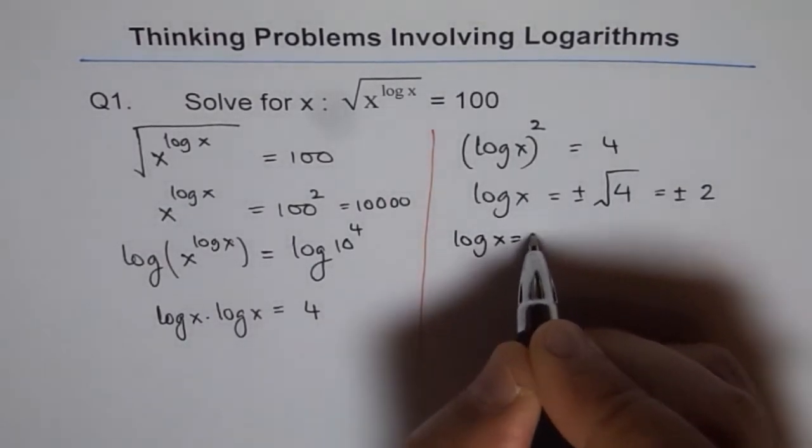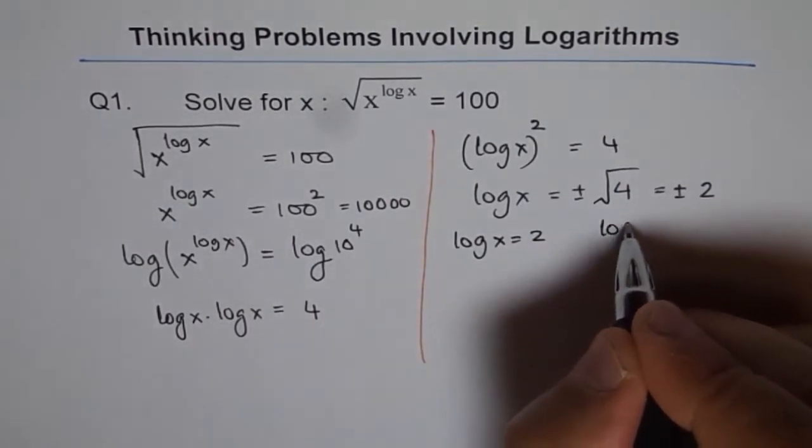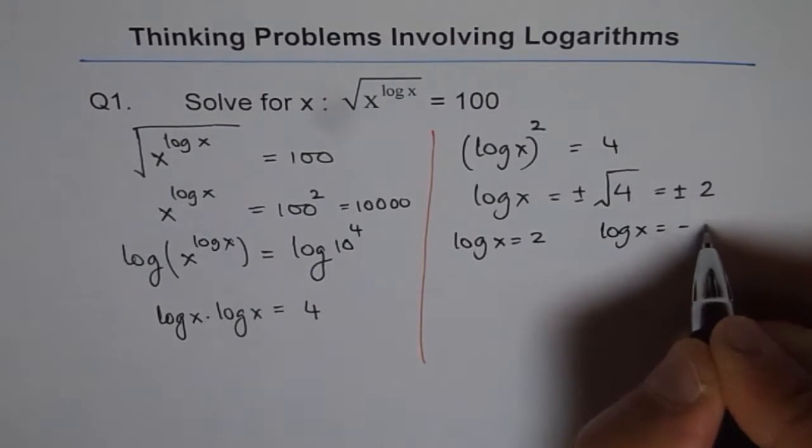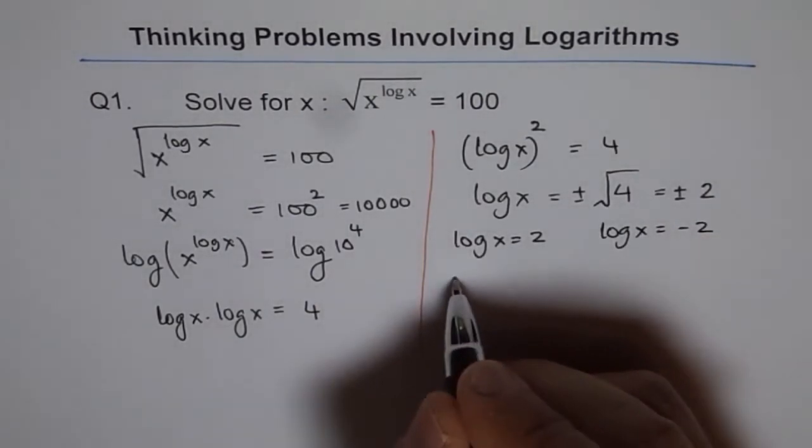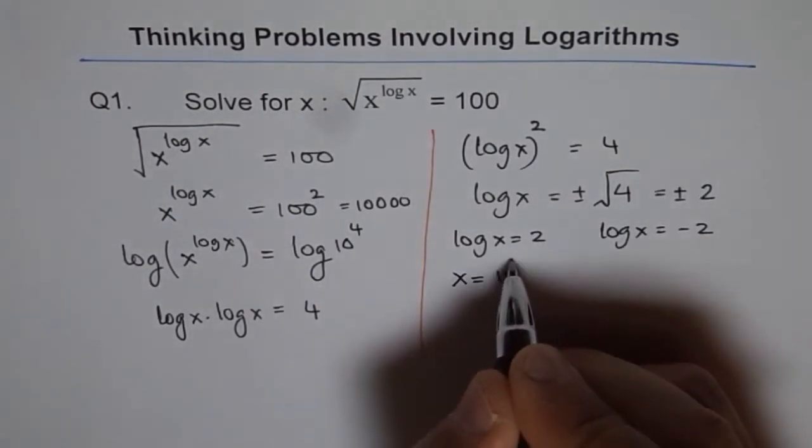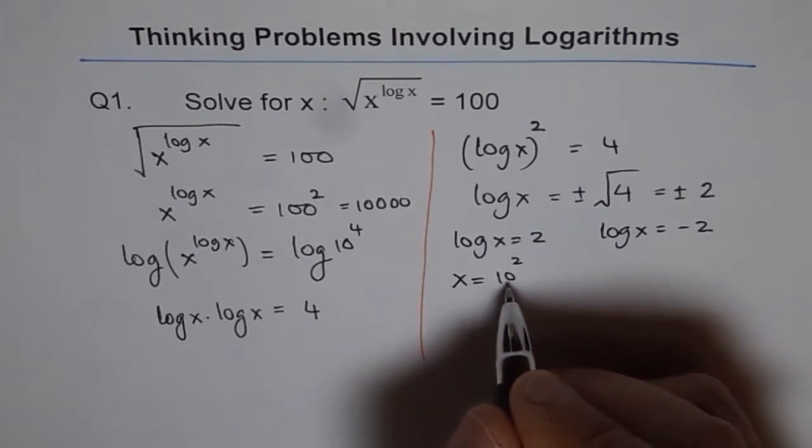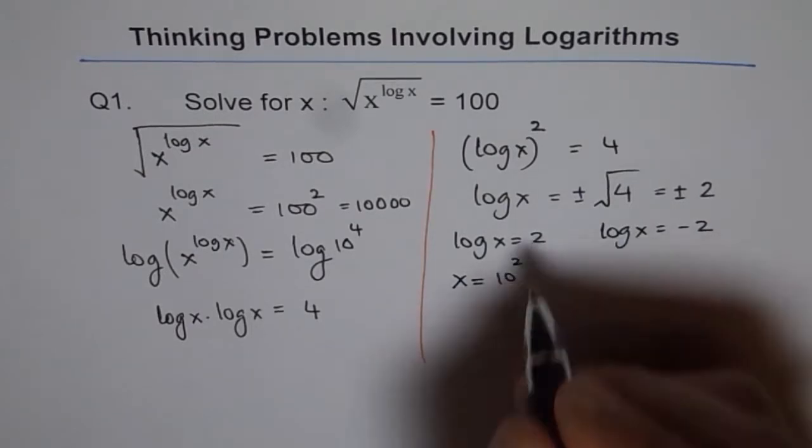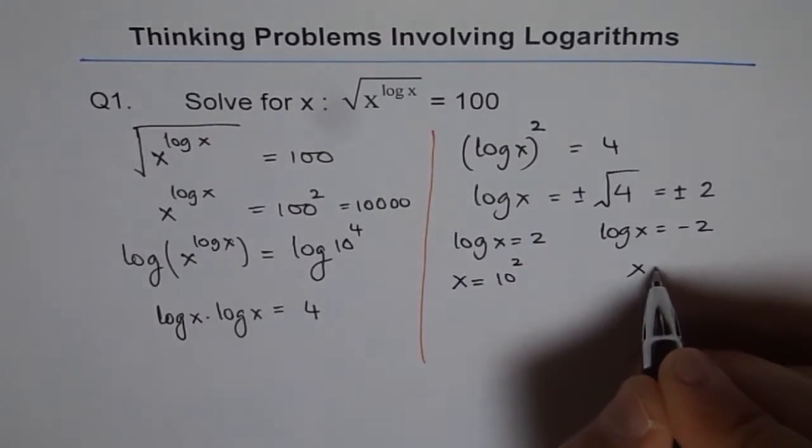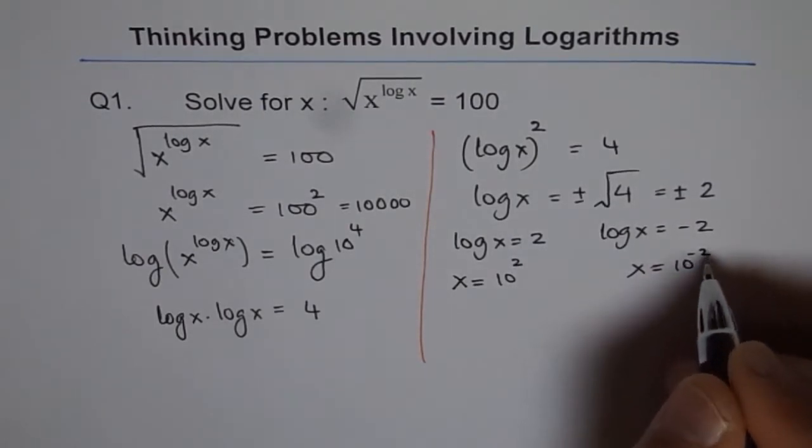Log x equals 2 gives us x equals 10 to the power of 2. There is one solution which is 100. And the other solution is x equals 10 to the power of minus 2.